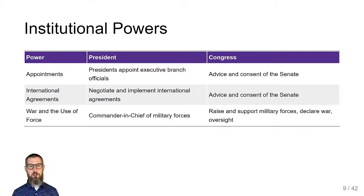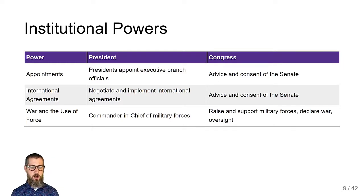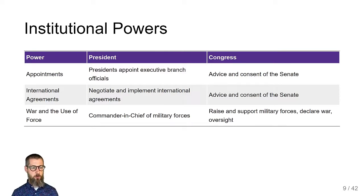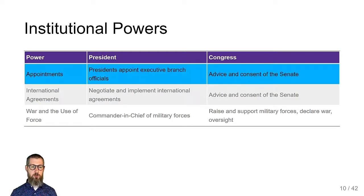Briefly: for appointments, the president appoints executive branch officials with the advice and consent of the Senate. For international agreements, they are typically negotiated by the executive but require Senate advice and consent. For war and the use of force, the president is commander-in-chief, but Congress raises and supports military forces, allocates funds, declares war, and conducts oversight — and that oversight function applies broadly, not just to military force.